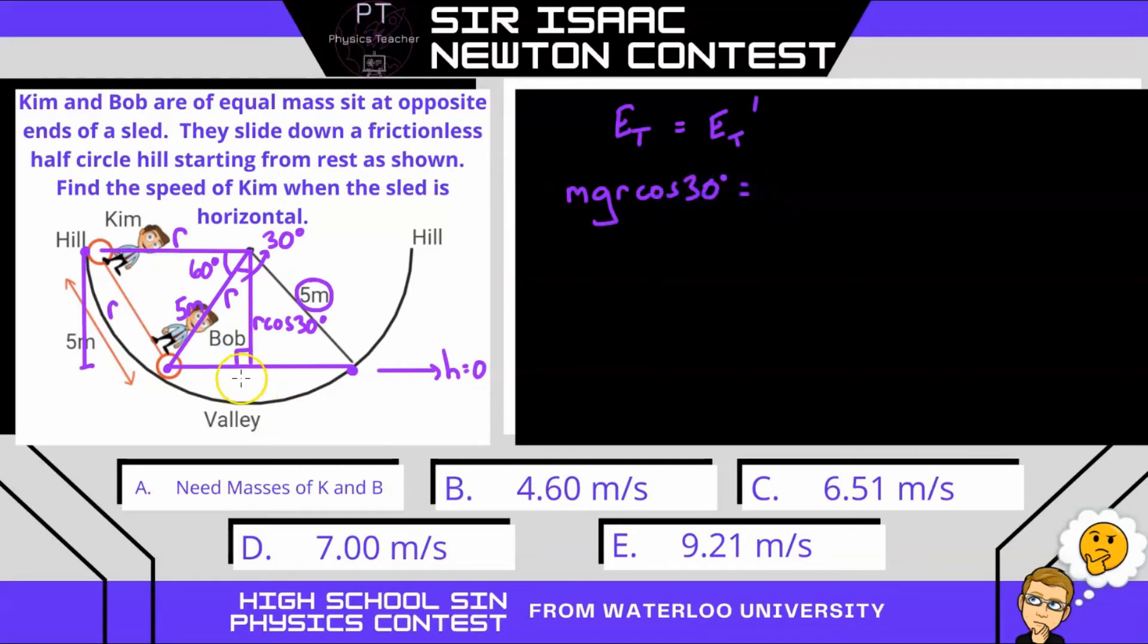And that's going to equal, now Bob's gravitational potential energy at both points will be zero, since that's where we've chosen our height to be zero, but Bob will have gained kinetic energy, as will Kim have. In fact, since they're on the same sled, they'll be going the same speed. So we're going to have a certain amount of kinetic energy for Kim, plus a certain amount of kinetic energy for Bob. Now their masses are the same. So you can see A is not correct, because there's a mass in every term they can cancel. And here we have a half v squared plus a half v squared, so that's just v squared. So v squared equals g r cos 30.